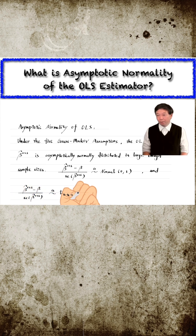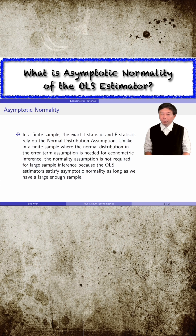When we have a large sample, the OLS estimator is asymptotically normally distributed under the Gauss-Markov assumptions. It allows us to perform the t-test and the f-test in large sample inference. This is called the asymptotic normality of OLS. Unlike in the finite sample, where the normality assumption is needed for econometric inference, the normality assumption is not required for large sample inference because the OLS estimators satisfy asymptotic normality as long as we have a large enough sample.